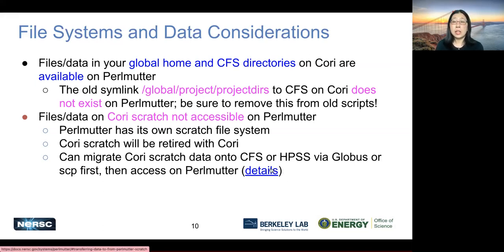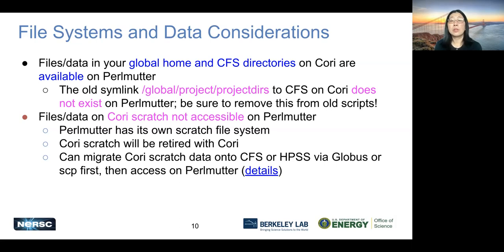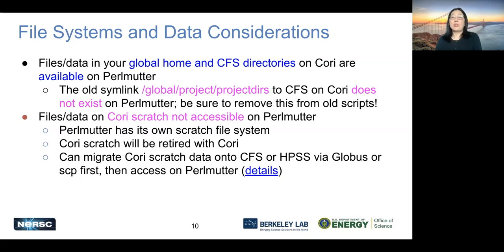Data on Cori scratch is not available or accessible on Perlmutter. Perlmutter has its own scratch file system, and Cori scratch data will be retired with Cori. So be sure to migrate your scratch data. There are ways — we have a link here — on how to move your data to CFS or to HPSS. Or if you want to move to Perlmutter scratch, there's actually a two-step process: you need a Globus endpoint from Cori scratch to DTN to CFS on the data transfer node, and then from the data transfer node use another Globus step to migrate onto Perlmutter. Details are in the link.